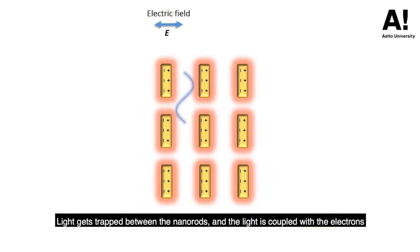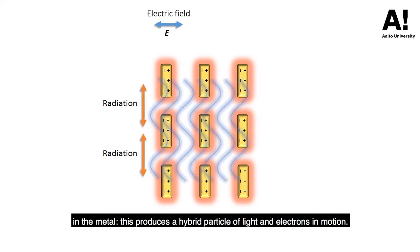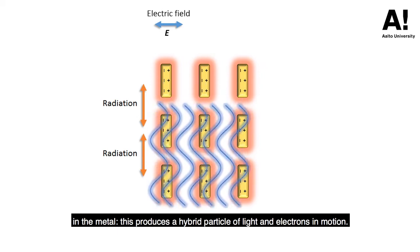Light gets trapped between the nano-rods and the light is coupled with the electrons in the metal. This produces a hybrid particle of light and electrons in motion.